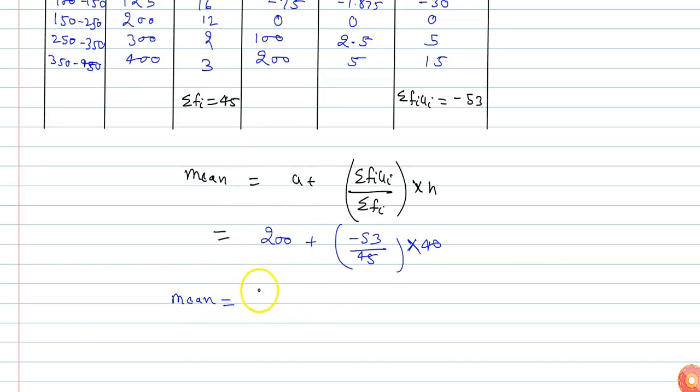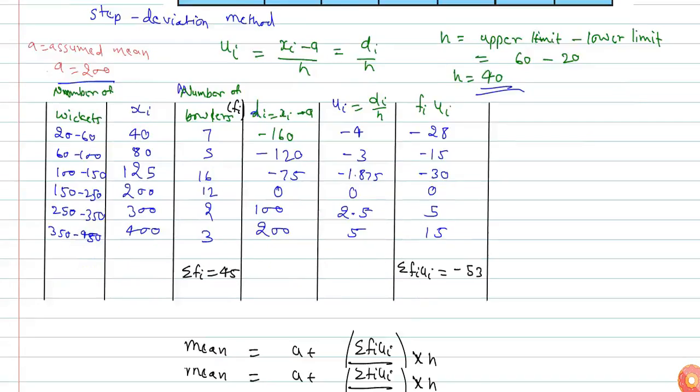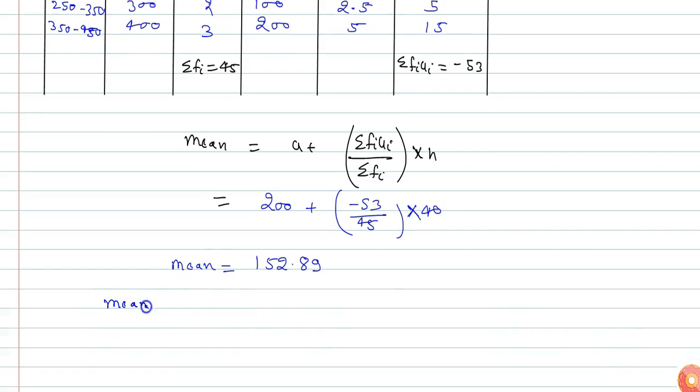So the mean of wickets is 152.89, which indicates the average wickets taken by a bowler.